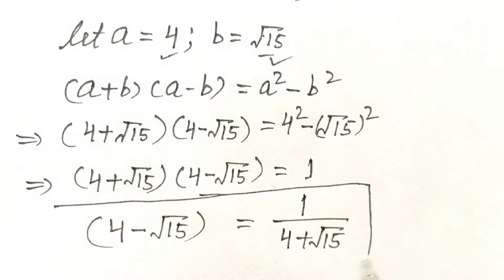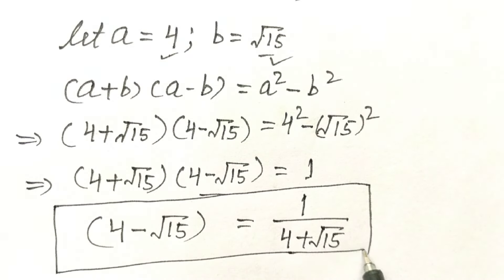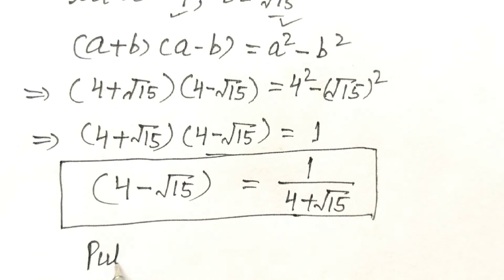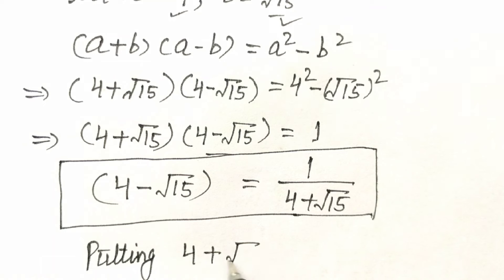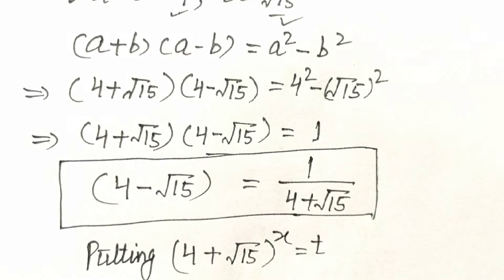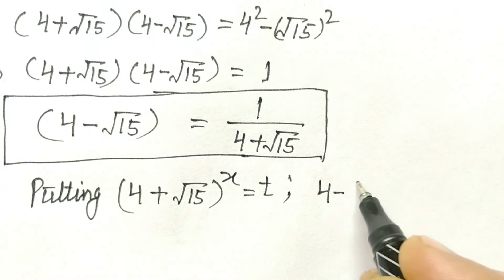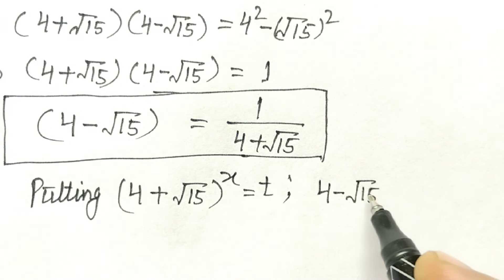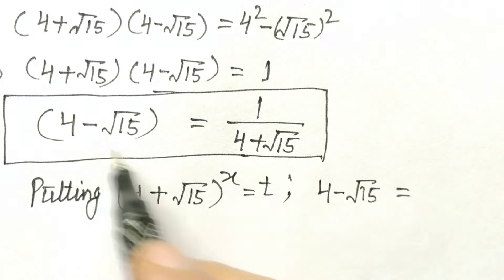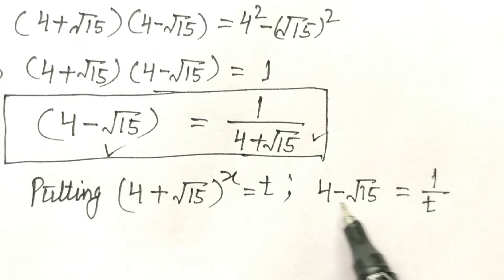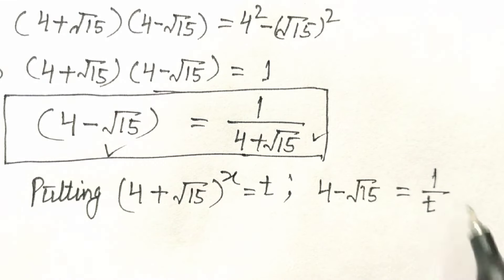To solve this equation, this will be our key step. Now, let (4 + √15)^x = t. Then (4 − √15)^x will be equal to 1/t, because (4 − √15) = 1/(4 + √15).